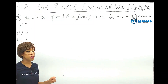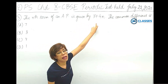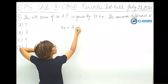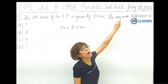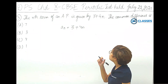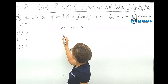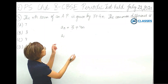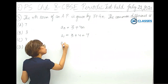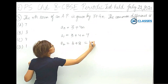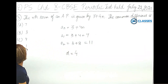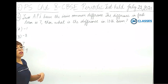The next question: the nth term of an AP is given by an equals 3 plus 4n. The first term a1 equals 3 plus 4 equals 7, and a2 equals 3 plus 8 equals 11. The common difference d equals a2 minus a1 equals 11 minus 7 equals 4. So option C is correct.